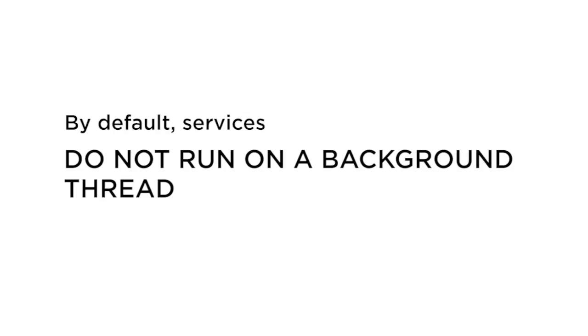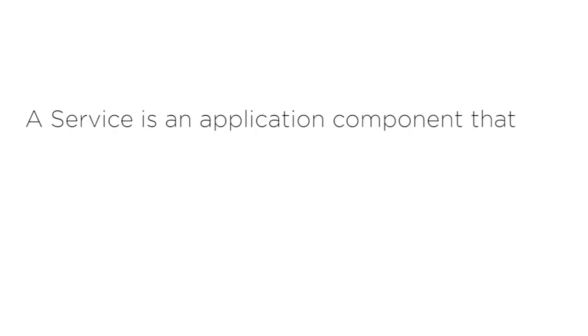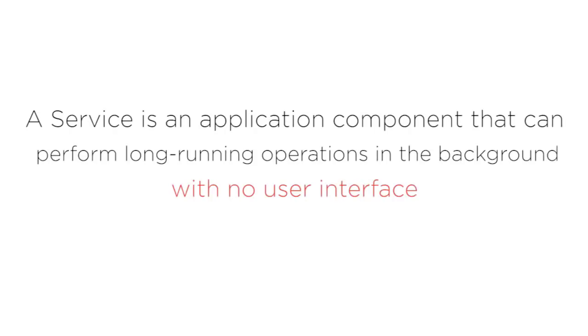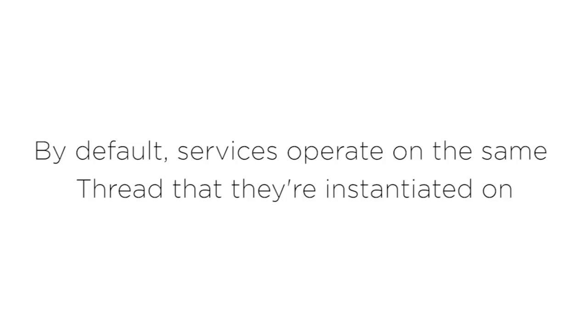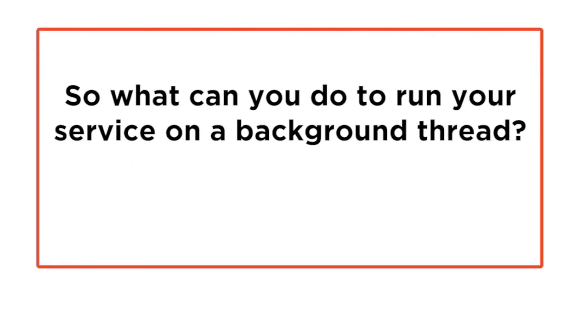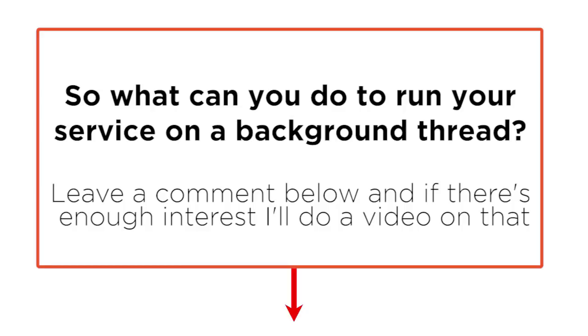Here are some things to watch out for when using services. By default, services do not run on a background thread. This is a very common misconception. The Android documentation describes services as performing long-running operations 'in the background,' but that could easily be interpreted as a background thread — that is definitely not the case. By default, services operate on the same thread they're instantiated on, which in most cases is the main thread. This video is focused on services that do not run on background threads — just a plain old service.